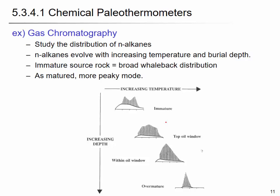The second representative method is gas chromatography. We take a sample, extract the pore fluid, and run gas chromatography to study the distribution of n-alkanes in paraffinic oil. N-alkanes evolve with increasing temperature and burial depth — in a mature stage you have a more sharp peak, and in an immature stage a broader peak. From this, we can evaluate the maturity of the kerogen in the source rock. There are more methods to measure maximum temperature and kerogen maturity.